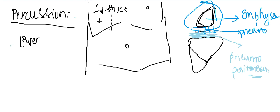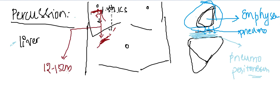You will also measure the liver span — the distance from the fifth intercostal space where dullness is first detected down to the inferior border of the liver. Mark where dullness begins superiorly, then identify the inferior border below the costal margin. This distance is the liver span, which is normally around 12 to 15 centimeters. Note how many centimeters of liver enlargement are present below the costal margin.